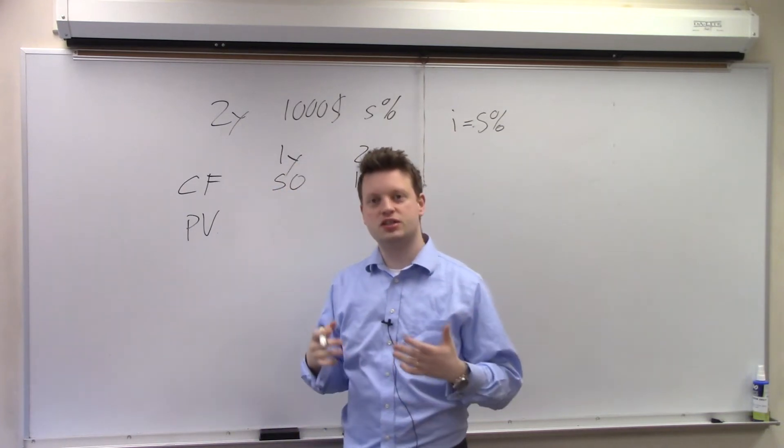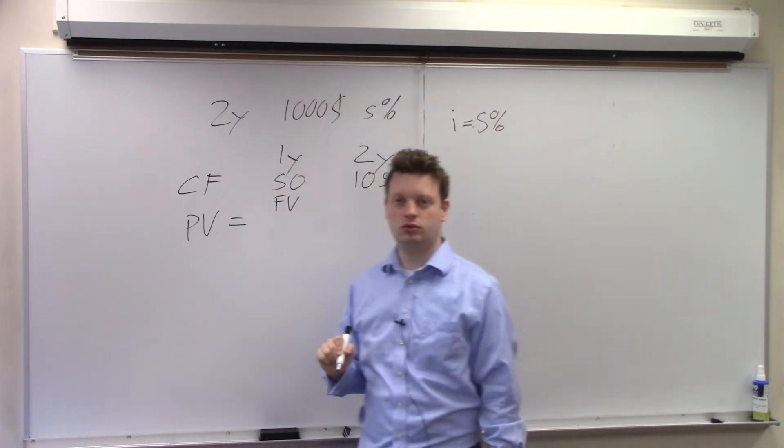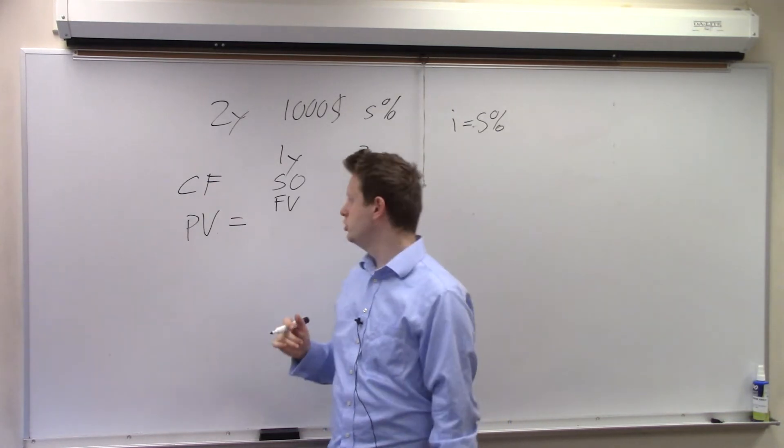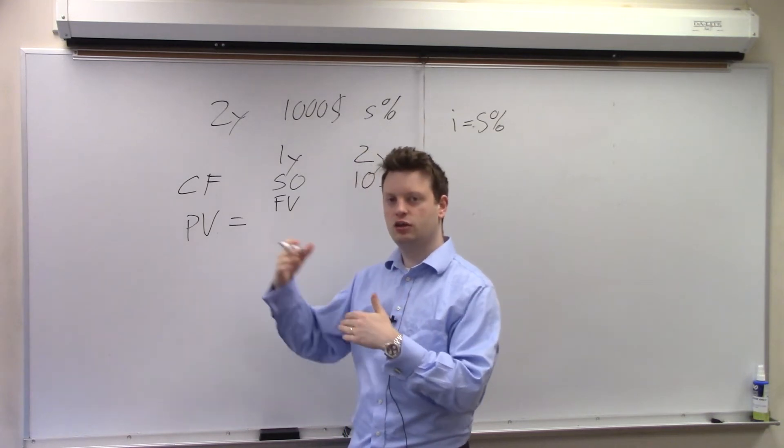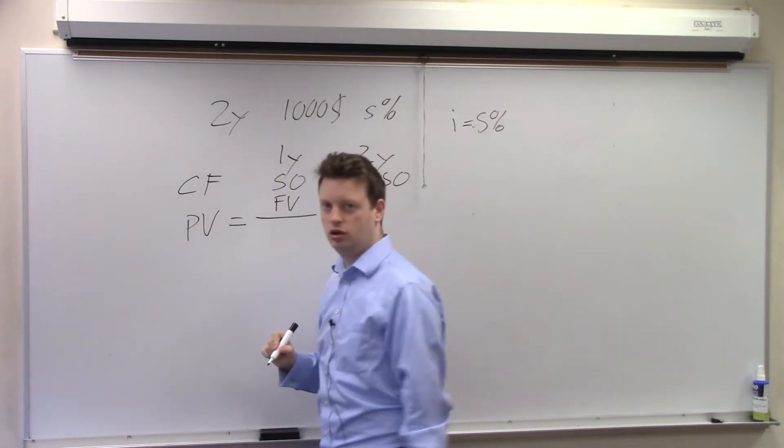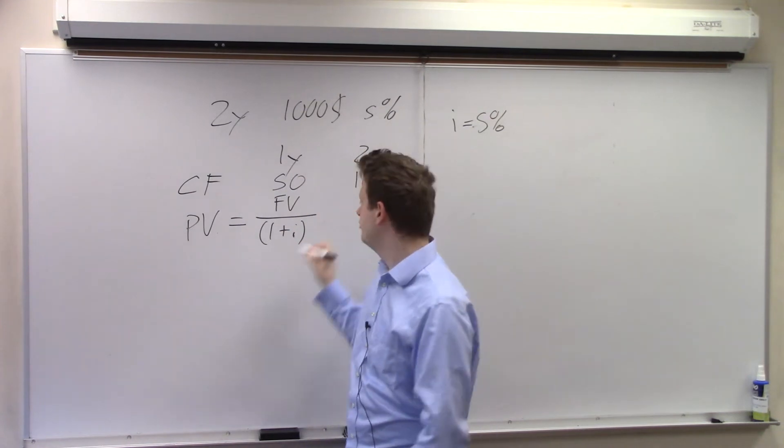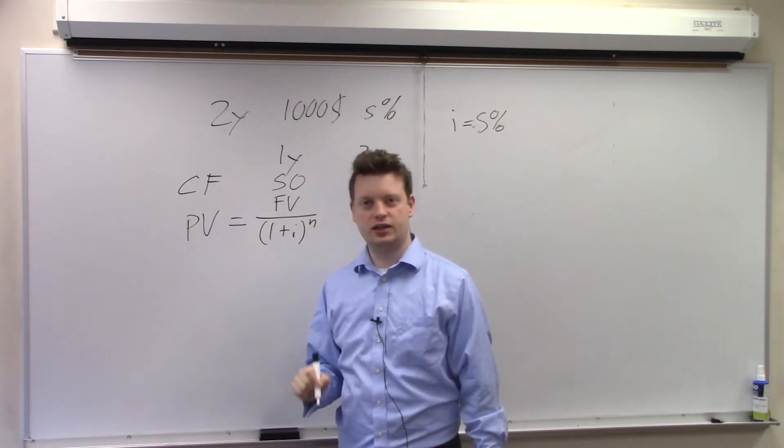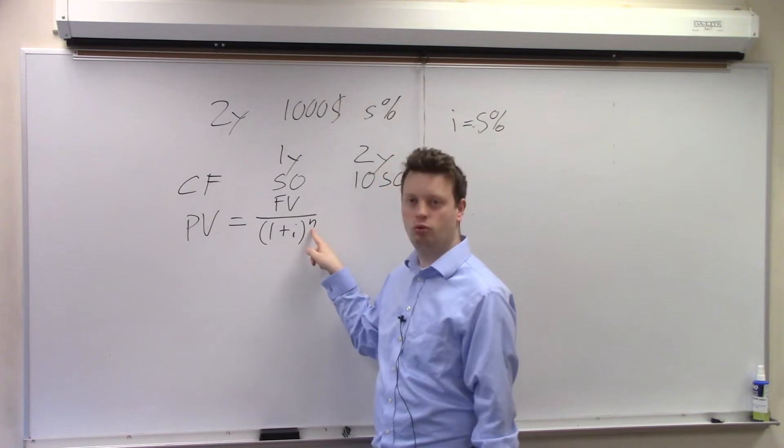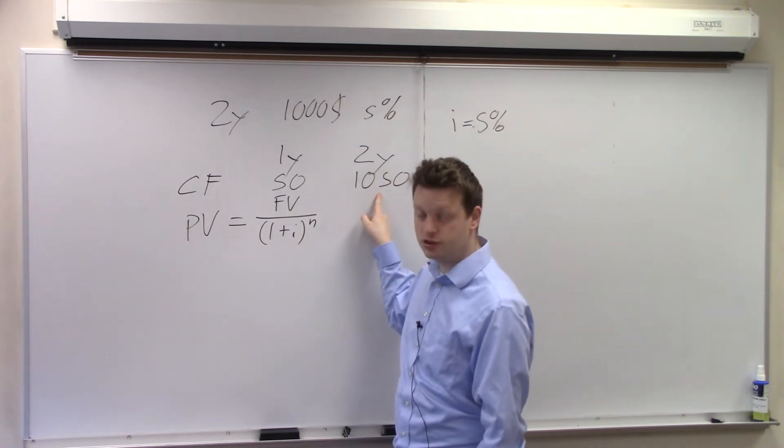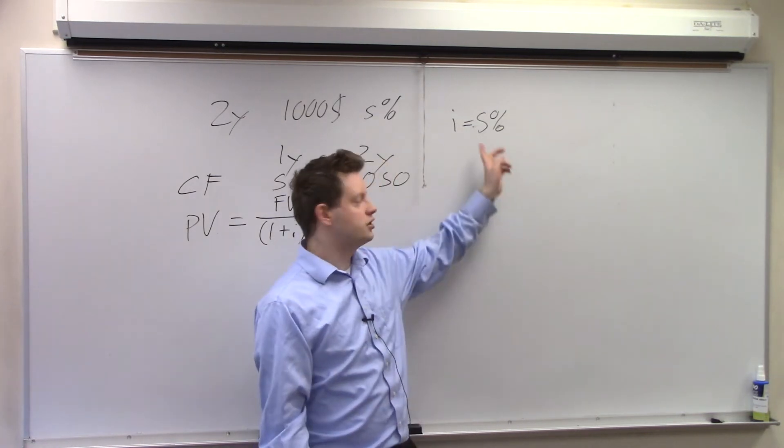The present value is defined as the cash flow payment or future value that at some point in the future I receive. So after two years I receive $1,050 in the future, that's the future value over 1 plus the interest rate raised to the power of n where n is the number of years in the future. So this payment is in one year's time so I raise it to the power of one. This payment is in two years time so I raise it to the power of two. The interest rate here is just the market interest rate.